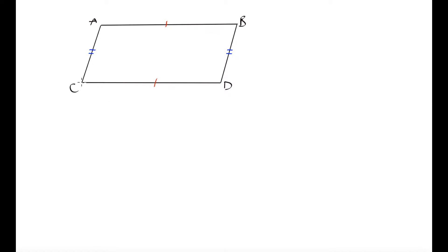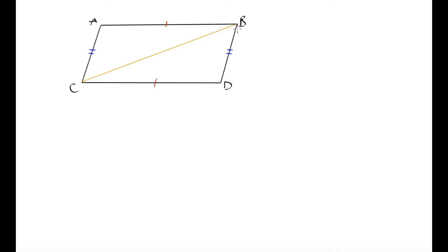Let's put in a diagonal right here. By doing this, we've created two triangles: a triangle made up of CAB, and a triangle made up of BDC. Something we can notice about these triangles is that they are going to have one side in common — side CB is common to both triangles.